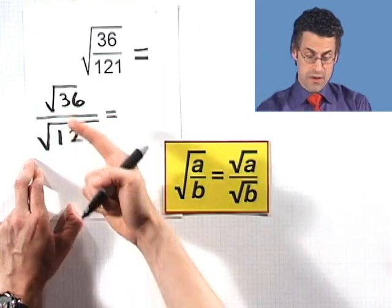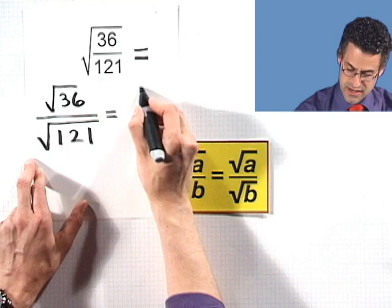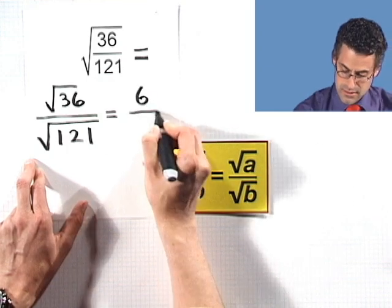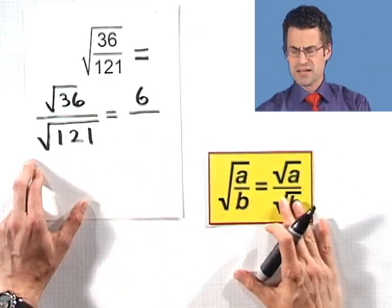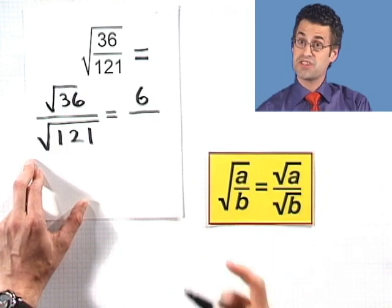Because the square root of 36 is 6. And why? Because 6 times 6 is 36. And the square root of 121, well, a little bit trickier, but I happen to know that it's 11, because 11 squared is 121.